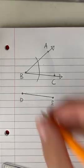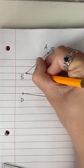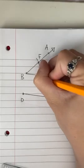Now, I'm going to pick the two points that it intersects at and call them F and G.